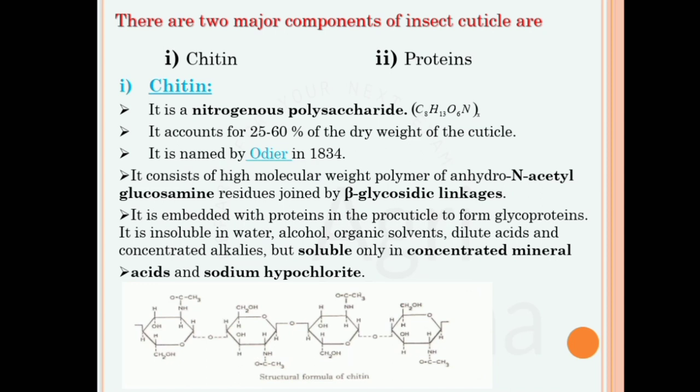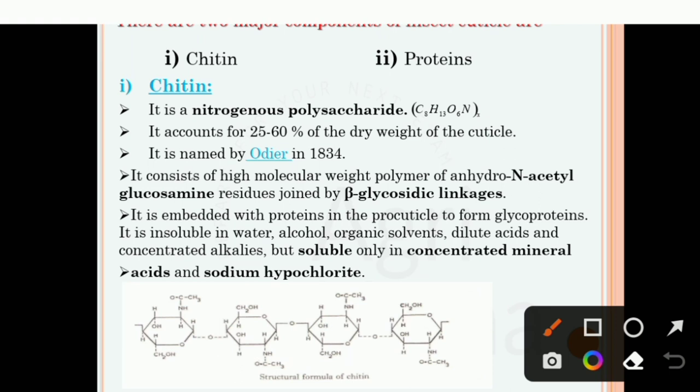Regarding the chemical structure of chitin, students need not be overwhelmed by the structural formula. You only need to remember one repeating unit — the first diagram — and understand that it is simply inverted alternately: CH₂OH appears on the lower side and the OC-CH₃ group on the upper side, then inverted again. Just remember one diagram and you can reproduce the whole structure.